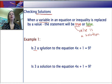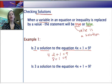Is 2 a solution to the equation 4x plus 1 equals 9? So to do that, we want to replace the variable with the value. So this would become 4 times 2 plus 1 equals 9. 4 times 2 is 8. 8 plus 1 is equal to 9. 9 equals 9. So 2 is a solution.